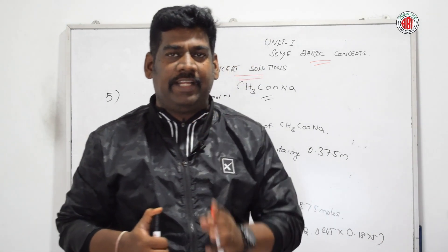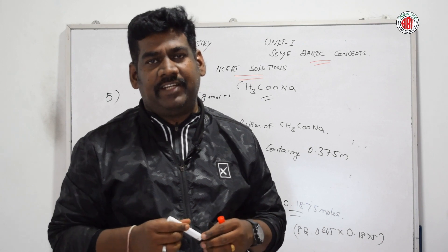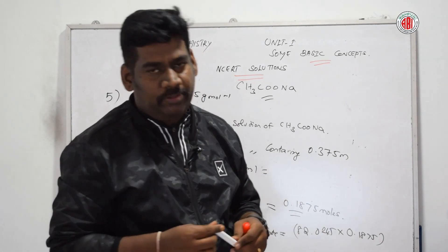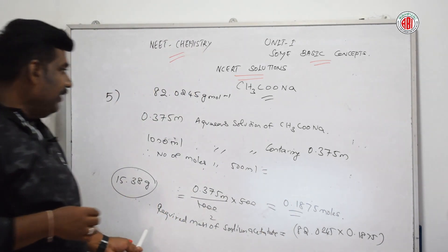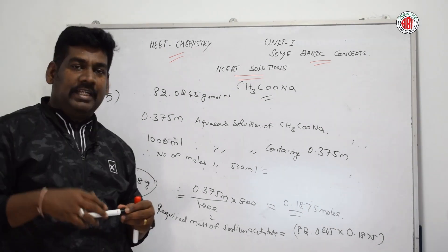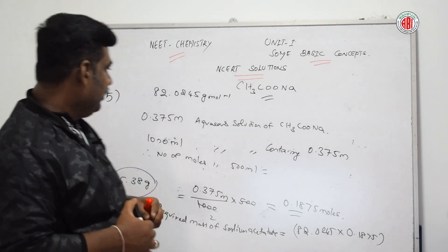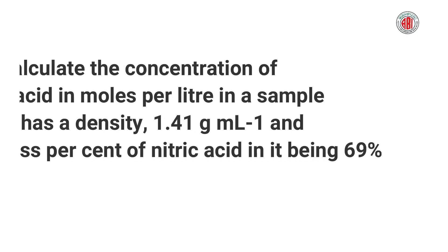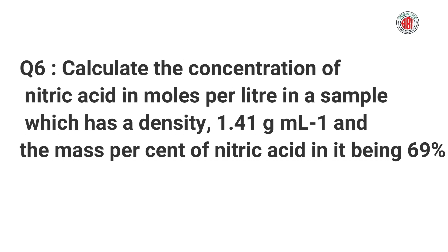Multiplying, we get approximately 15.38 grams. This is the mass of sodium acetate required to make 500 mL of a 0.375 molar aqueous solution. The next question: calculate the concentration of nitric acid in moles per liter in a sample which has a density of 1.41 grams per mL.